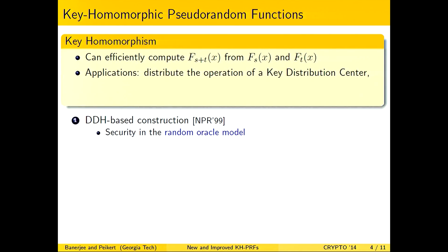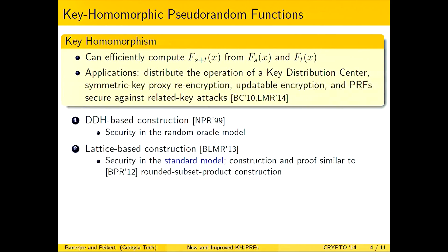The application they proposed was to distribute the operation of a KDC, a key distribution center. Then at last year's Crypto there was work by Boneh, Lewko, Montgomery, and Raghunathan, where security is in the standard model, based on lattice assumptions — the Learning With Errors problem. The framework is very similar to one of the constructions from the BPR paper, in that their construction and proof is based on the rounded subset product construction, and therefore they inherit similar drawbacks.